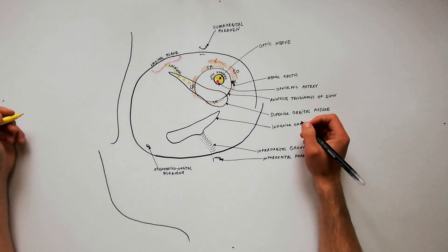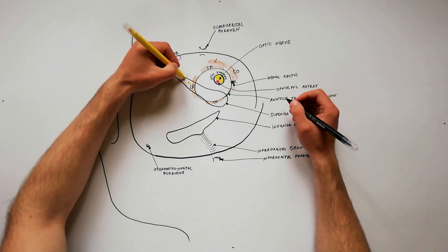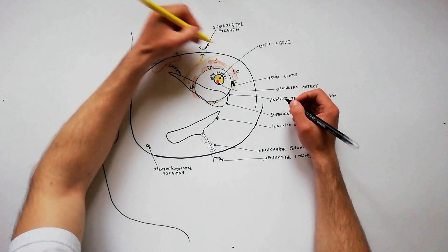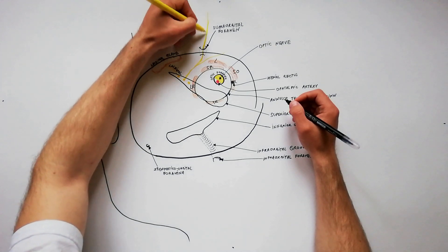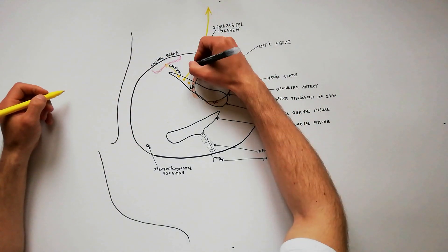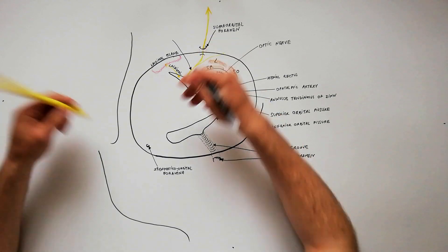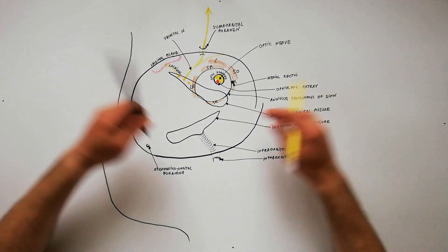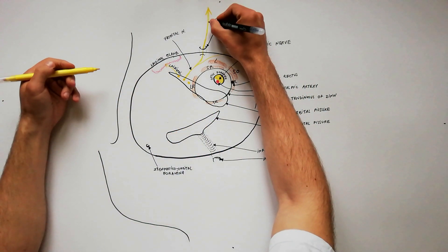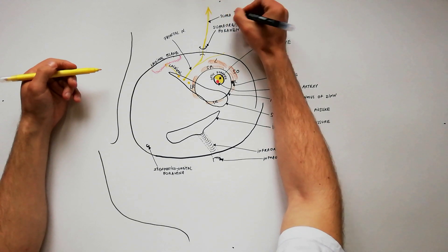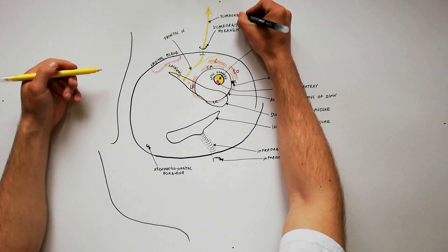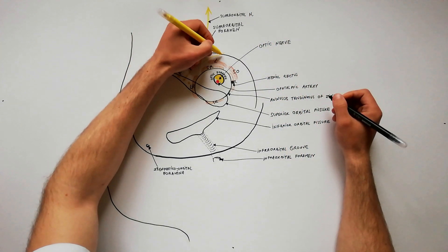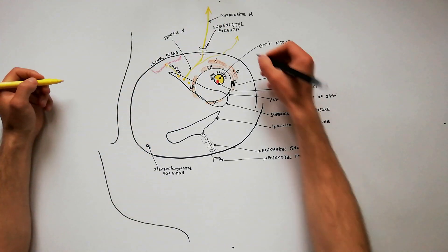The frontal nerve is the largest branch of the ophthalmic nerve. It runs forward between the levator palpebrae superioris and the periosteum, and divides into two branches: the supraorbital and the supratrochlear nerves. The supraorbital nerve passes through the supraorbital foramen and gives off palpebral filaments to the upper eyelid. Additionally, it supplies the conjunctiva, the frontal sinus, and the skin of the forehead extending back to the middle of the scalp.